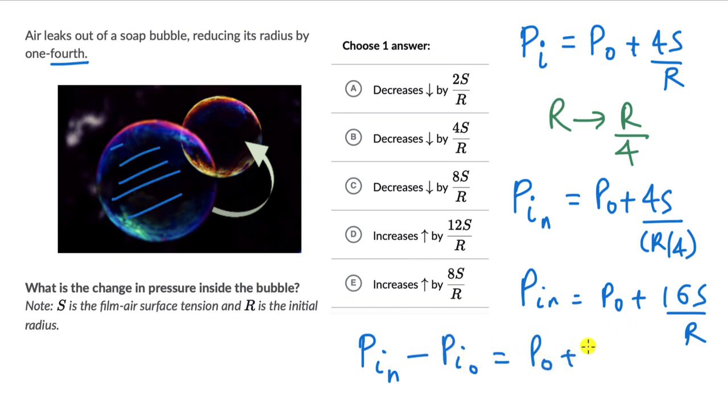this will be P naught plus 16S by R minus P naught minus 4S by R. P naught gets cancelled and this becomes 12, 12S by R. So the pressure inside increases by 12S by R.